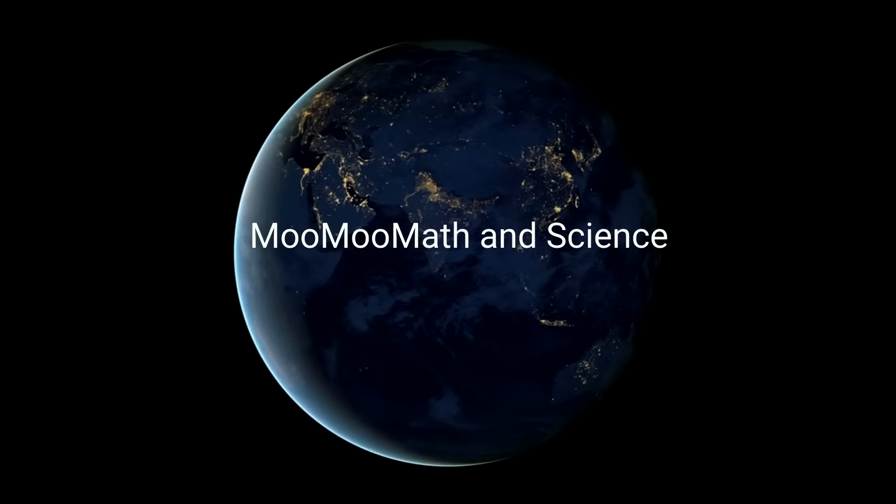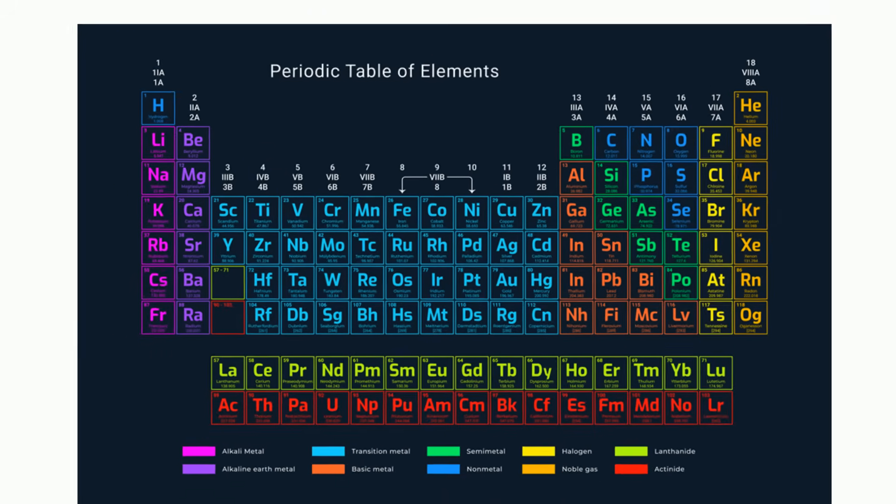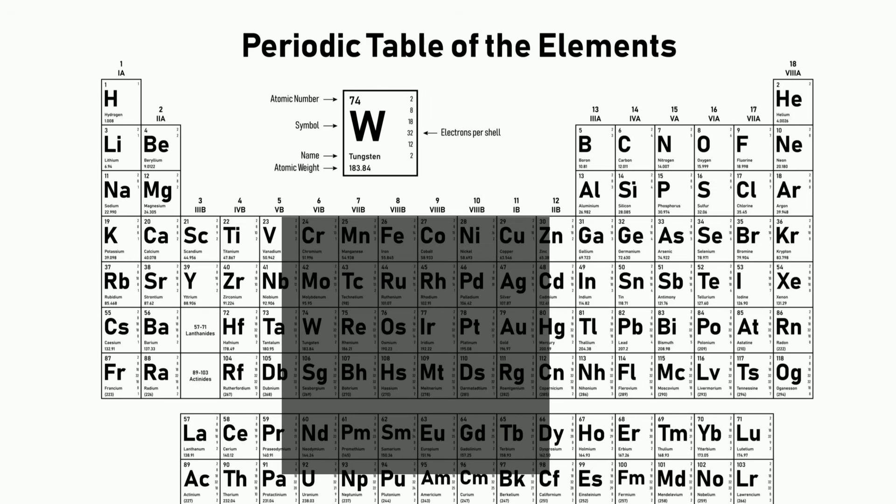Welcome to Moo Moo Math and Science. In this video, let's learn to use the periodic table in order to find an element's name, symbol, number of protons, neutrons, and electrons.